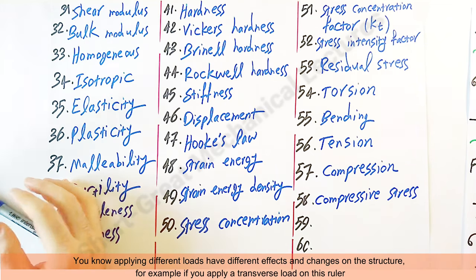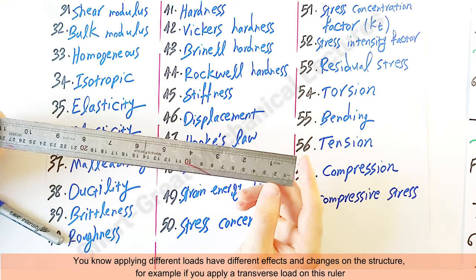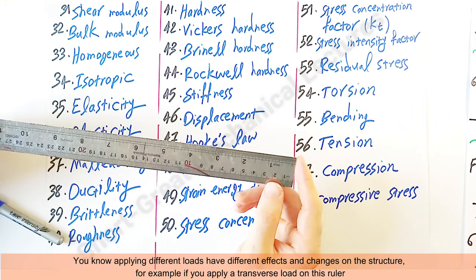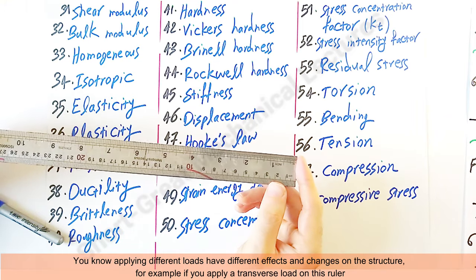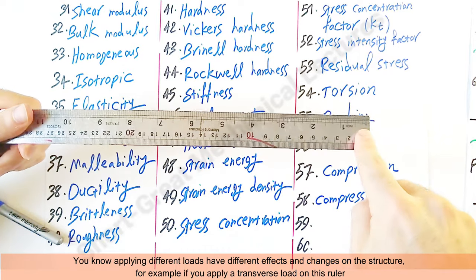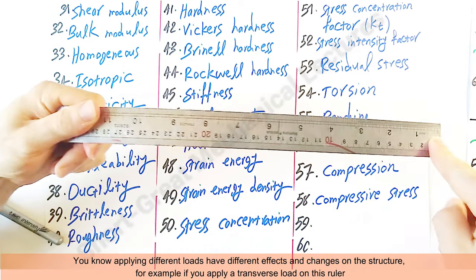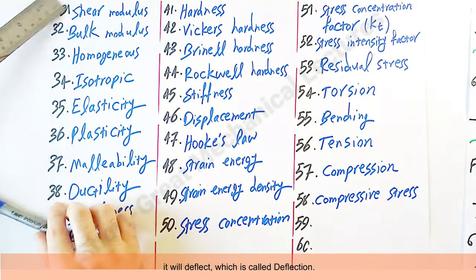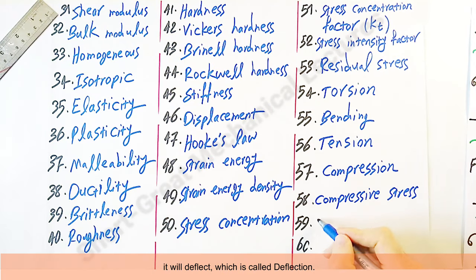You know, applying different loads have different effects and changes on the structure. For example, if you apply a transverse load on this ruler, it will deflect, which is called deflection.